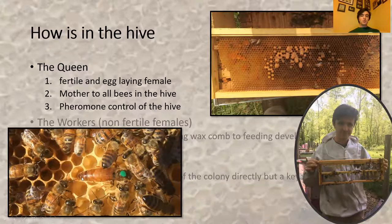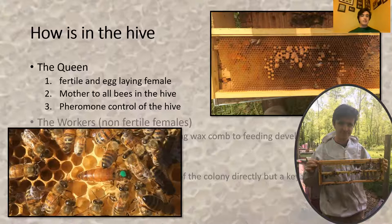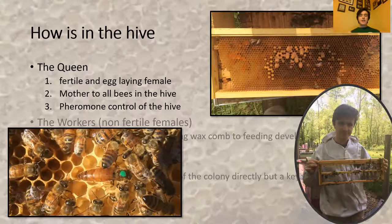The queen's long abdomen stores all the eggs she'll lay in her one-to-three year lifespan. Worker bees give her the room she needs to lay eggs inside cells, and they constantly feed, clean, and groom her — keeping the egg-laying machine of the hive well-oiled. I say she's the only fertile female and that workers are non-fertile females.